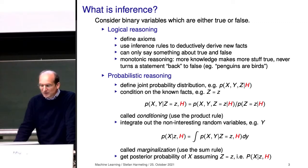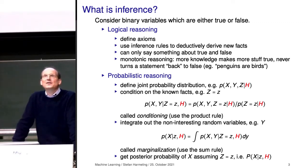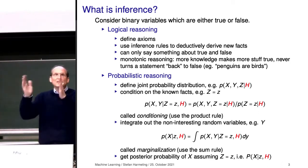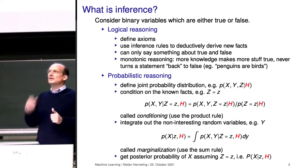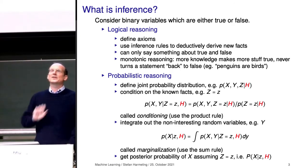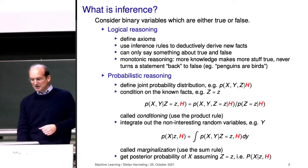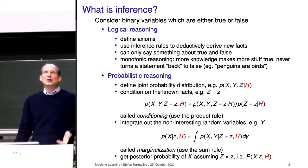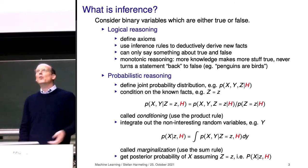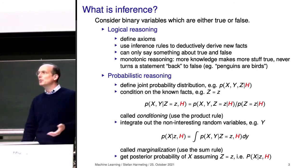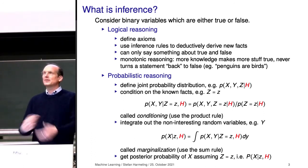This is sometimes also called marginalization. You might have heard the definition that there's a joint distribution over several variables and you can marginalize towards one variable or a subset. In German it's called Randverteilung — you take only the margin of it, but it could be any subset. In machine learning books, when people write 'and now we marginalize,' this is synonymous for saying we apply the sum rule to a certain variable.